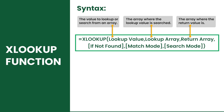Unlike the previous lookup functions, XLOOKUP can perform both vertical and horizontal lookups and has a separate lookup array and return array, which makes it more flexible to use on large data.